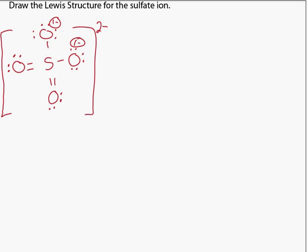In the previous video, we created a Lewis structure for the sulfate ion, where we exceeded the octet rule for sulfur by utilizing empty d orbitals, which allowed us to minimize the separation of formal charge.